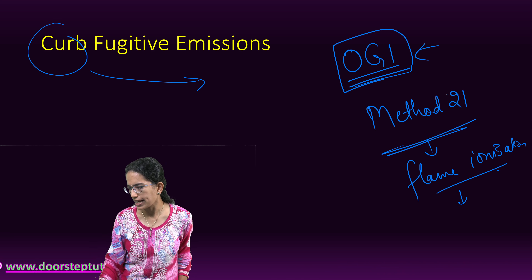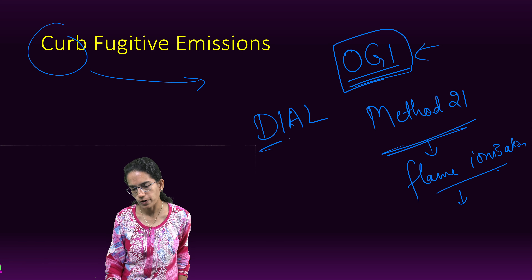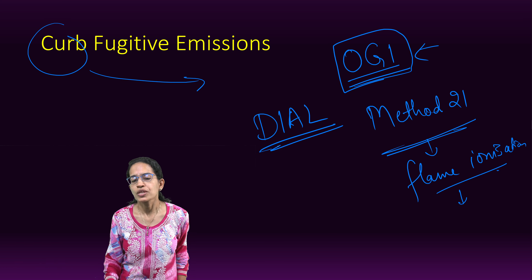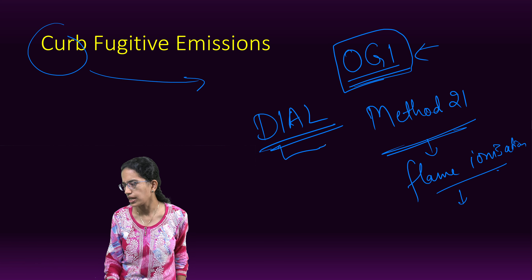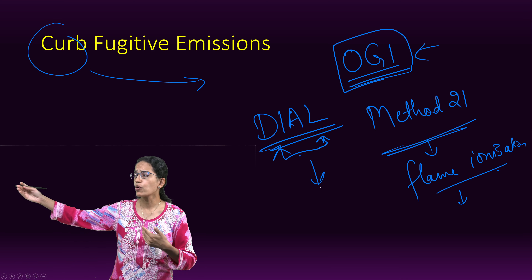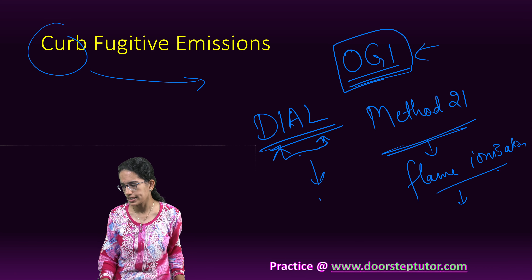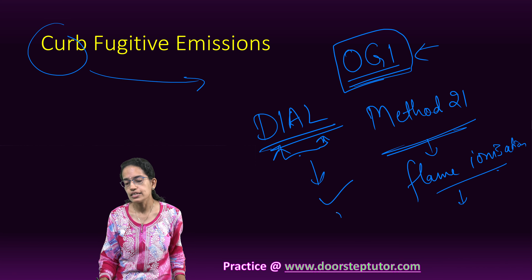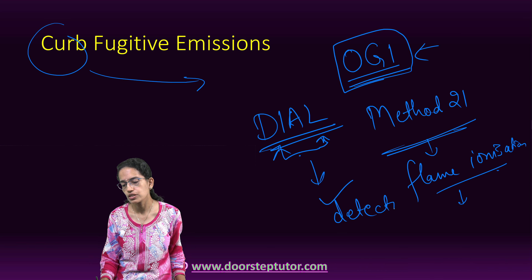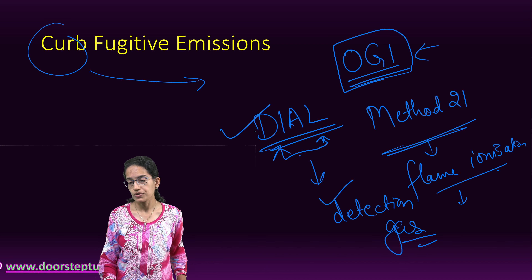Another technology which has been developed is known as the DIAL technology — differential absorption lidar. With a distance of more than 100 meters, it can quickly detect gas leakage. So detection of gas and gas leakage can be done very quickly with DIAL.